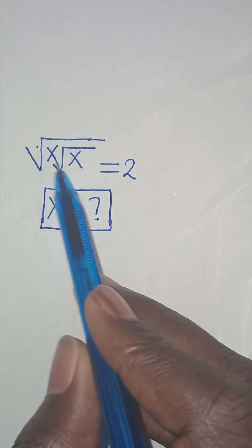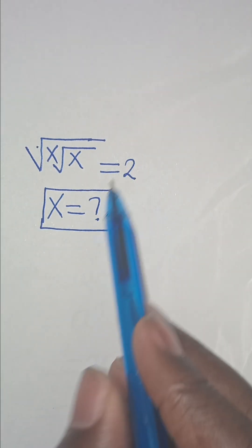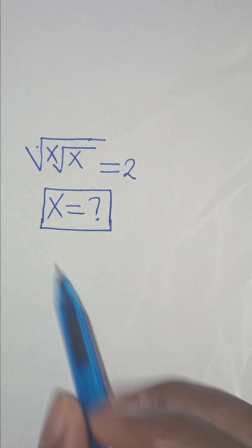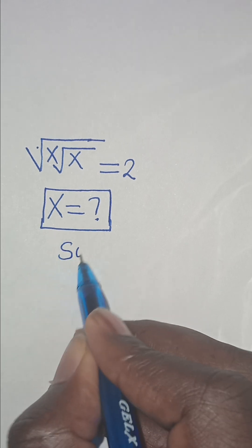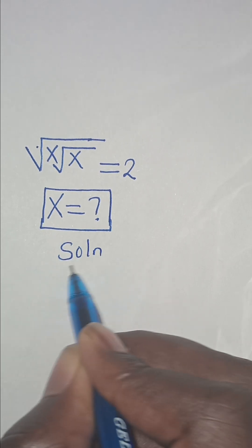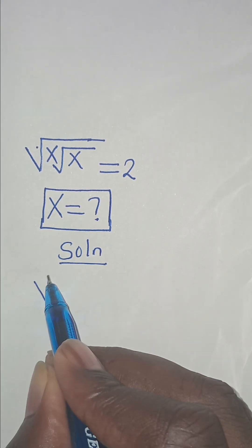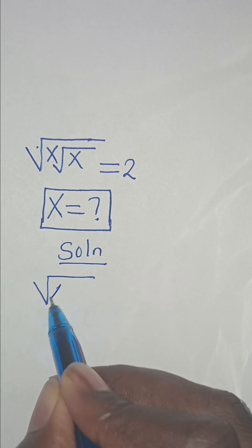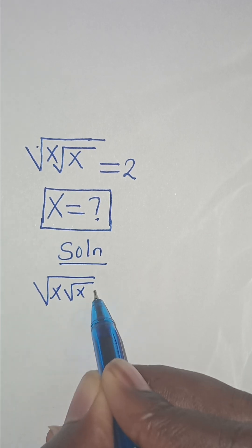The square root of x times the square root of x is equal to 2. So what is the value of x? Let's provide a solution. We have the square root of x times the square root of x equals 2.